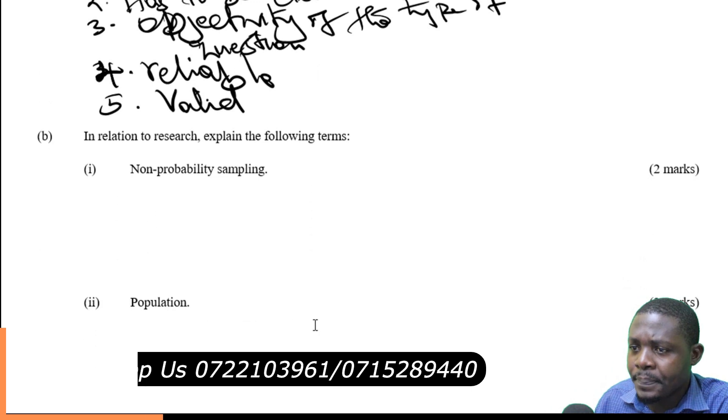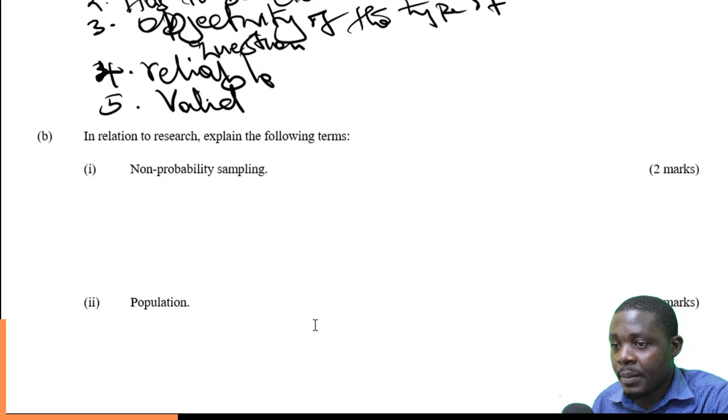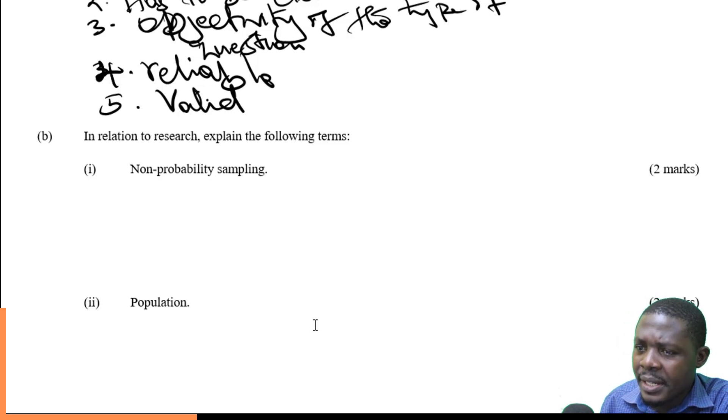Then part B, in relation to research, explain the following terms. We have number one, the non-probability sampling. Number two, or Roman II, population. And then we have sampling frame. Let's start with Roman I, non-probability sampling.